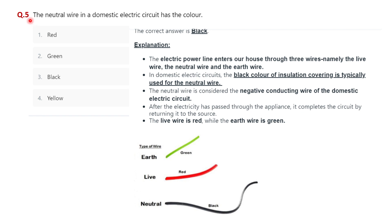Question five: the neutral wire in a domestic electric circuit has which color? The correct option is black. In a domestic electric circuit, the neutral wire is black, the earth wire is green, and the live wire is red.